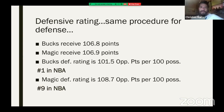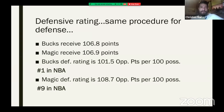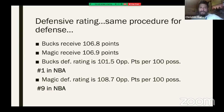Defensive rating works the same way. The Bucks and the Magic receive roughly the same number of points per game, so you might say they have similar defenses. But the Bucks' defensive rating is 101 points per 100 possessions, while the Magic give up 108.7. So the Bucks have the best defense in the NBA; the Magic are ninth. Don't look at the raw numbers alone — they're deceiving. You need the analytics behind them.